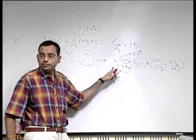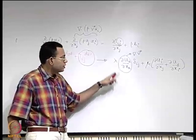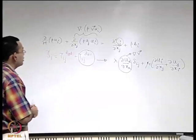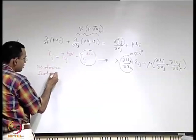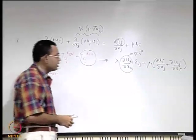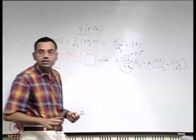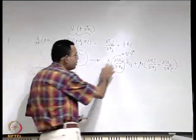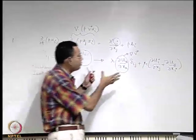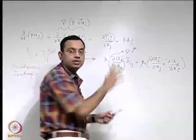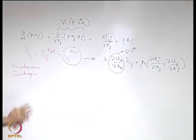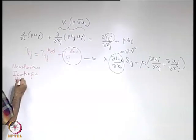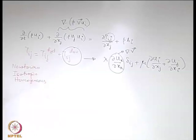The assumptions under which this is valid include: Newtonian fluid, and most importantly isotropic fluid. Homogeneous fluid implies that lambda and mu are not dependent on position x_i. If lambda and mu are position-independent, we say the fluid is homogeneous. So with the assumptions of homogeneous, isotropic, Newtonian fluid and a stationary reference frame, it is possible to substitute tau_ij in terms of velocity gradients.